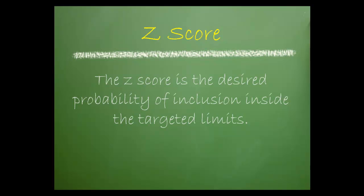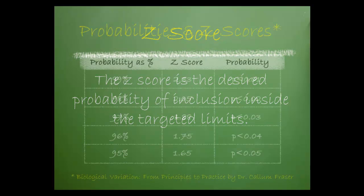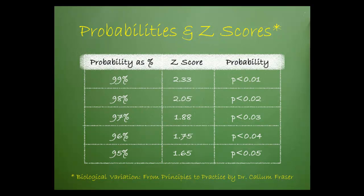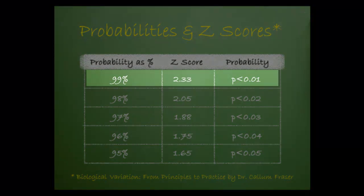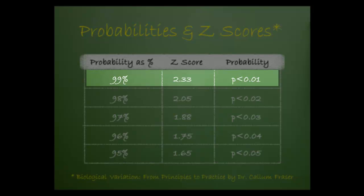The z-score is the desired probability of inclusion inside the targeted limits. Dr. Cullen Frazier provided the following examples of probabilities and z-scores in his text Biological Variation from Principles to Practice. If we desire to include 99% of the values within our target limits, then we should use a z-score of 2.33. This equals an inclusion probability of p less than 0.01.